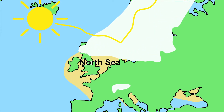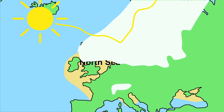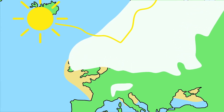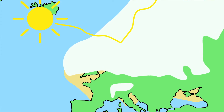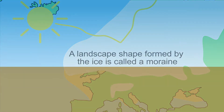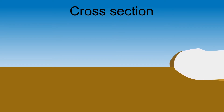In Scandinavia, more and more ice formed in the highlands, which did not melt due to the cold climate but slowly moved to the rest of Europe and formed the landscape. A landscape shape formed by the ice is called a moraine. Some material is deposited under the ice. This type of soil consists of an unsorted mixture of clay, sand, and boulders, and is called boulder clay.